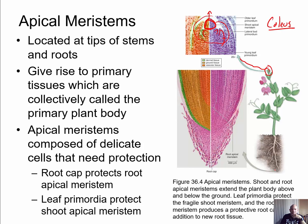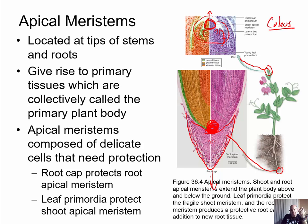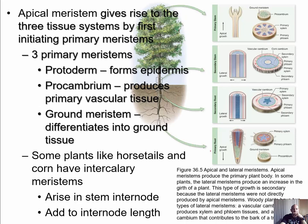The root apical meristem is located near the root tip. As those cells divide, they grow the root downward, with one cell remaining as a meristem and the other going down paths of differentiation to form vascular, ground, and epidermal tissues. Some cells produce the root cap. The root cap serves two functions: protecting the delicate meristem cells from damage as the root pushes through soil, and containing cells that are sensitive to gravity, keeping the root growing downward in response to gravitational direction.